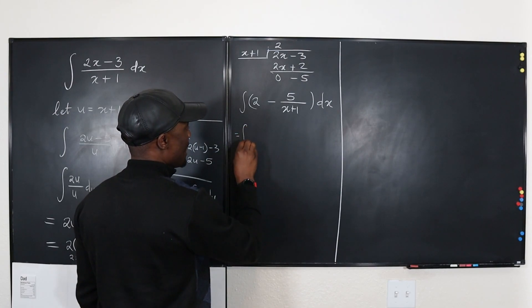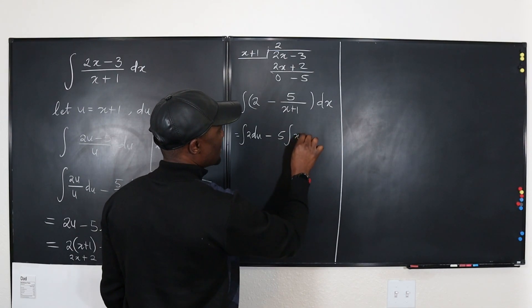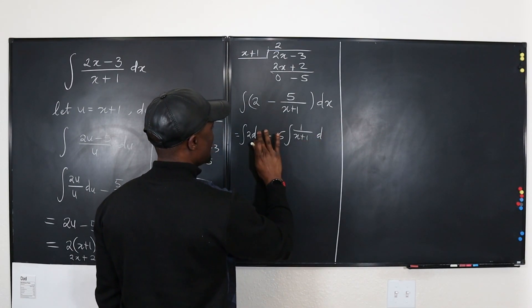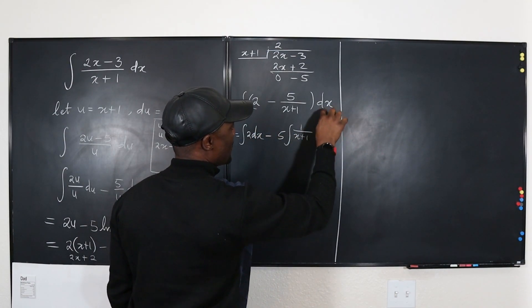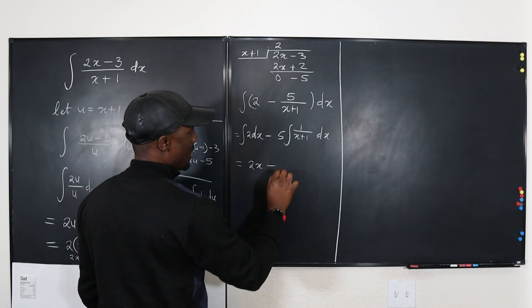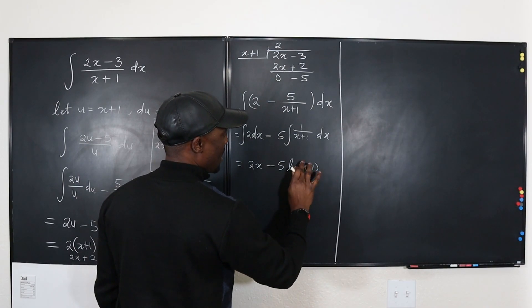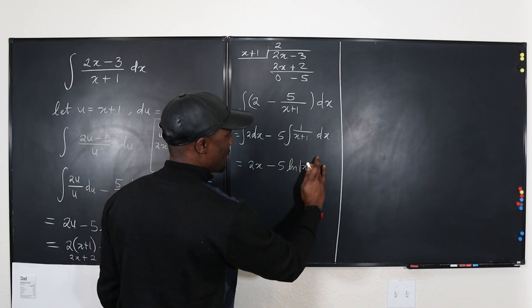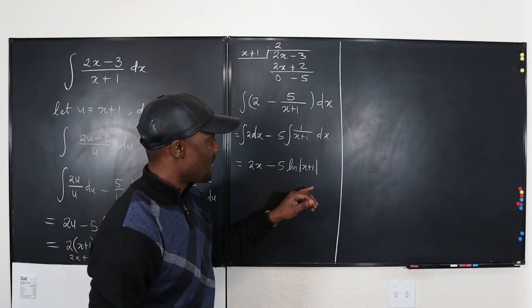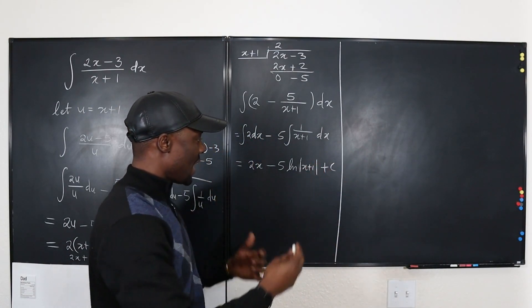It is integral which is the quotient, and then this minus 5 is the remainder over the divisor. So this is equal to the integral of 2 DX minus 5 integral of 1 over X plus 1 DX. What's the answer here? This is 2X minus 5 times the natural log of X plus 1. Let me use this absolute value function because I don't know what X will always be. If X is negative, then this will not work. That's why we use absolute value plus C. And that's our answer.